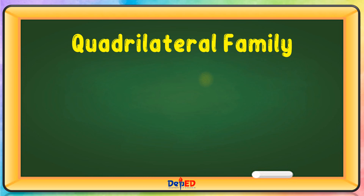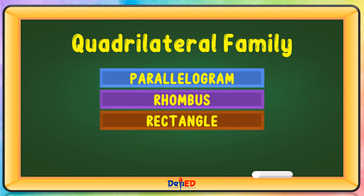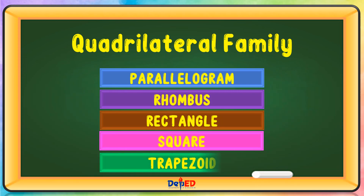The quadrilateral family includes: parallelogram, rhombus, rectangle, square, and trapezoid.